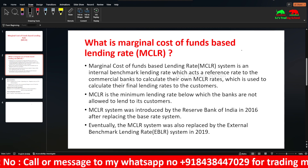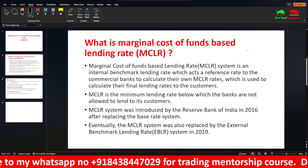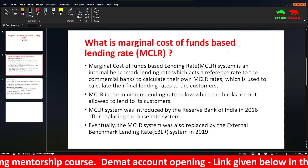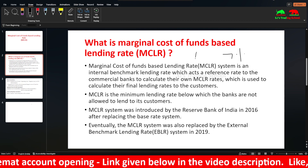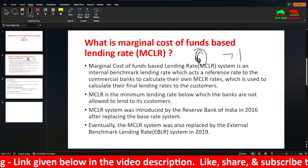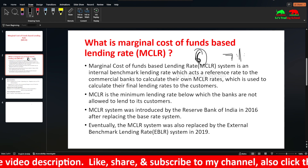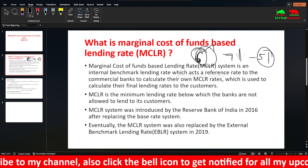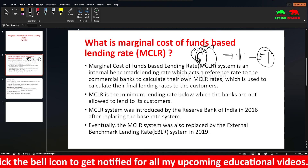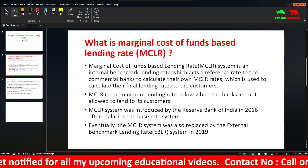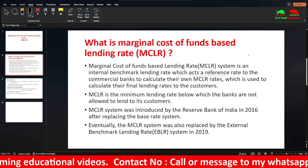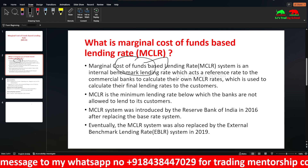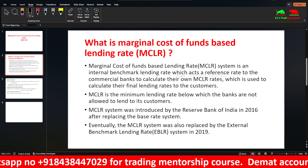Suppose with the base rate system, the interest rate was based on the cost of funds — specifically the deposit rate at a fixed rate. For example, if a customer puts a fixed deposit at 7%, that deposit rate is used. The problem is this is the average cost of funds — weighted average cost of funds. But MCLR is based on the marginal cost of funds.